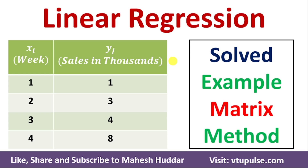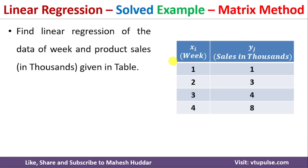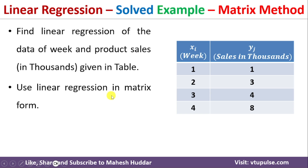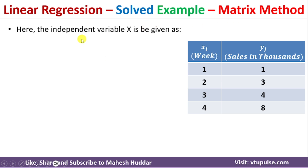Welcome back. In this video I will discuss how to apply the linear regression algorithm for a given dataset to predict the value of the dependent variable given the value of the independent variable using the matrix method. We have been given a dataset with four weeks of sales data. We need to apply the linear regression algorithm in matrix form and then predict the sales for the fifth week. X is the independent variable and Y is the dependent variable.